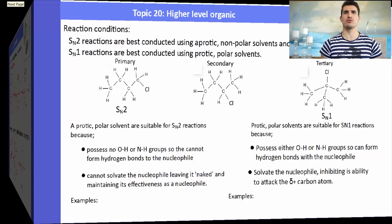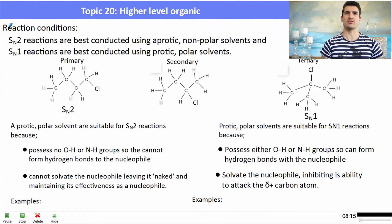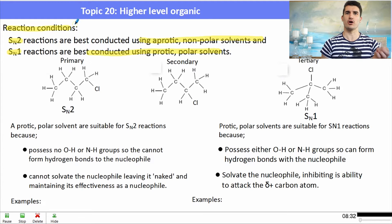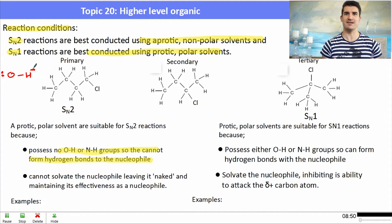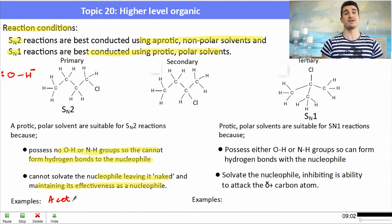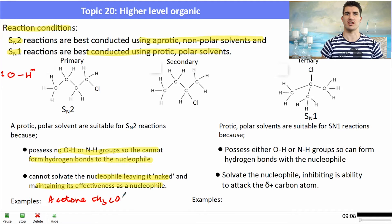Regarding reaction conditions: SN2 reactions are best conducted using aprotic, non-polar solvents. SN1 reactions are best conducted using protic, polar solvents. For SN2, we need a solvent with no OH or NH groups, which means it cannot form hydrogen bonds with the nucleophile. We want to leave the nucleophile 'naked' — not solvated — so it maintains its effectiveness and is able to attack the positively charged carbon. Acetone is a good example of a solvent for an SN2 reaction.